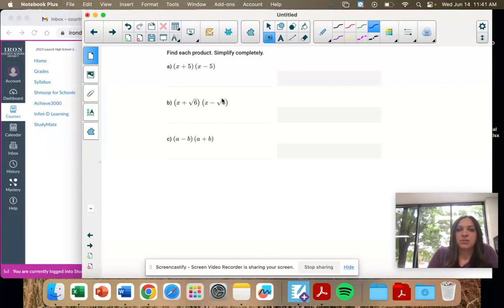X plus square root of 6, X minus, and then A and B. So let's start on the AB one, because this is our general form.